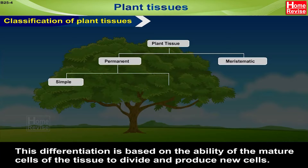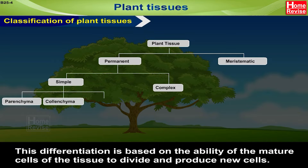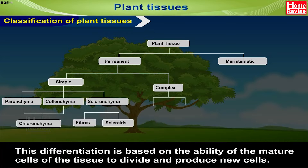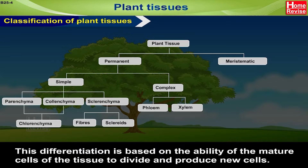Permanent tissues are simple and complex. Simple tissue is composed of a single type of cell and is of three types: parenchyma, colenchyma, and sclerenchyma. Parenchyma and colenchyma together are called chlorenchyma. Sclerenchyma is of two types: fibers and sclerides. Complex tissue is of two types: phloem and xylem. Phloem consists of sieve tube and companion cell, and xylem consists of xylem cells and tracheids. Meristematic tissue is classified into three types: apical, lateral, and intercalary.